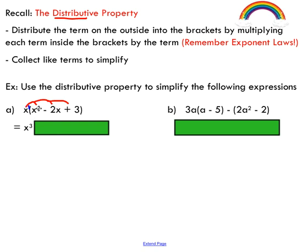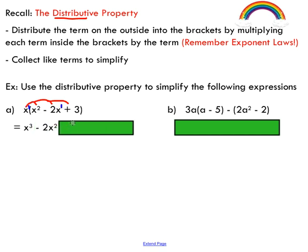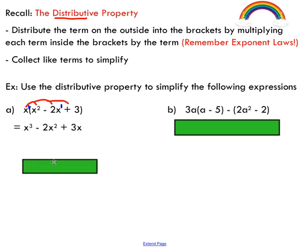Next, I'm going to distribute x and multiply by negative 2x. Same thing — I'm going to add my exponents. I've got an exponent of 1 on this x term as well, so I add those two together. I keep my coefficient the same because I'm multiplying negative 2 times 1 — there's an imaginary 1 in front of the x term — so I end up with negative 2x². Lastly, I'm going to do x times 3 and end up with 3x.